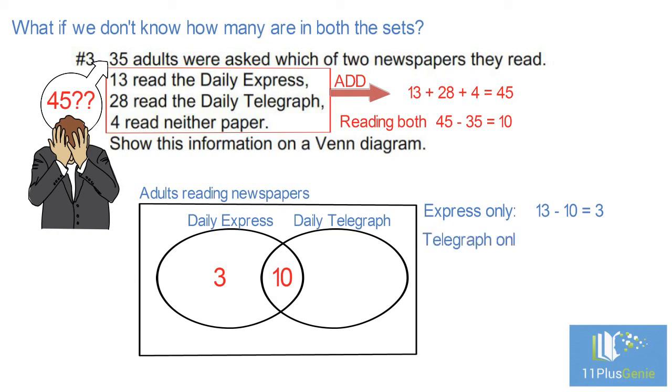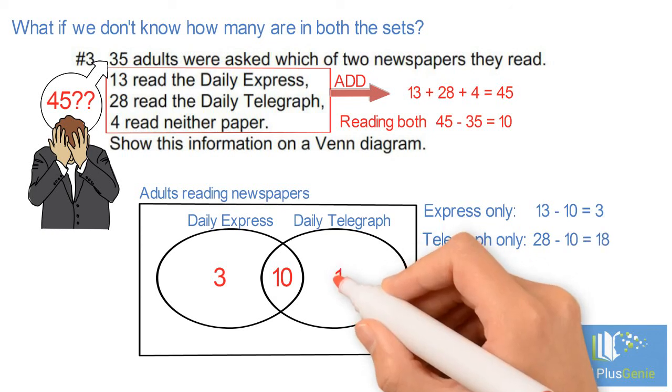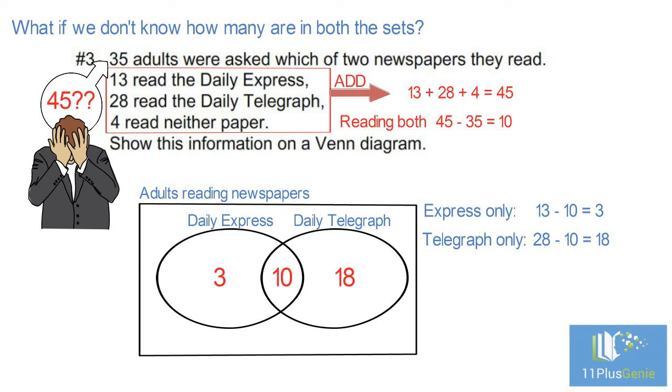28 read the Daily Telegraph. 10 are already in the circle for the Daily Telegraph, so we need 28 take away 10 which equals 18 in the Daily Telegraph circle. The 4 who read neither goes outside both circles.